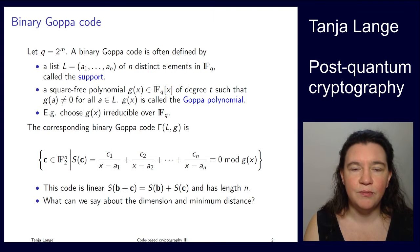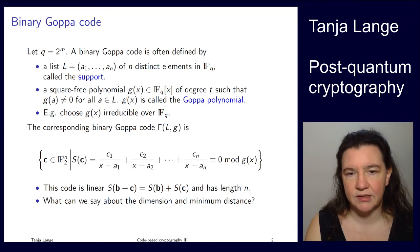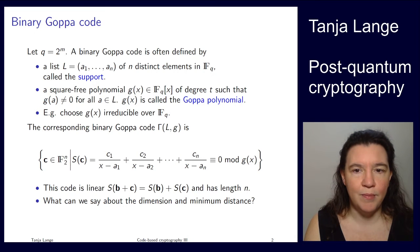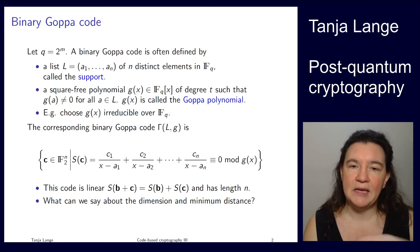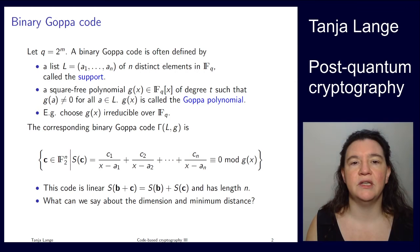You're also picking a square-free polynomial over this field, so over this F2 to the m, and some degree t. We typically want to choose irreducible, but square-free is really what matters for the properties we're going to look at next.